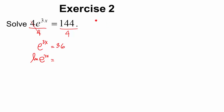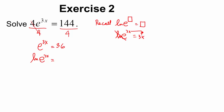Recall that the natural log of e to anything is just that thing — so the natural log of e to the 3x equals 3x. It's almost like the e and ln cancel out. So 3x equals the natural log of 36. The last step is to divide both sides by 3: x is exactly equal to the natural log of 36 divided by 3.